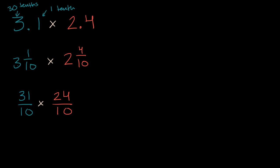So this is going to give us, our denominator is pretty straightforward, 10 times 10 is 100. And then 31 times 24, we can multiply it in the traditional way that we're used to multiplying two-digit numbers. Thirty-one times 24 is going to be equal to, four times one is four, four times three is twelve, now we're going to be multiplying in the tens place, we're going to put a zero here.